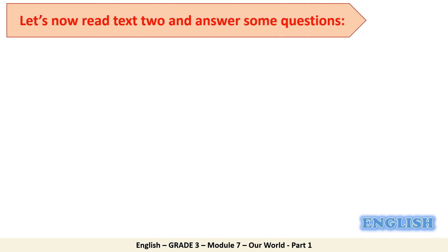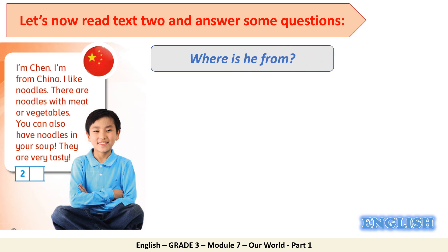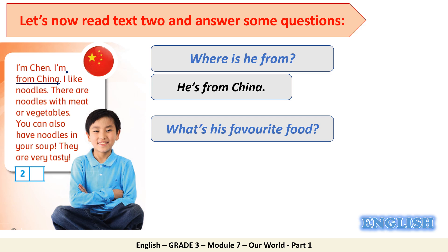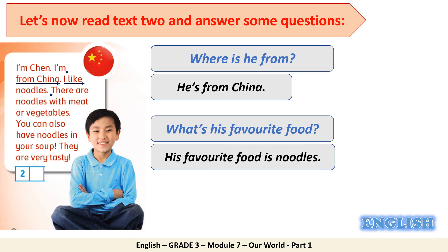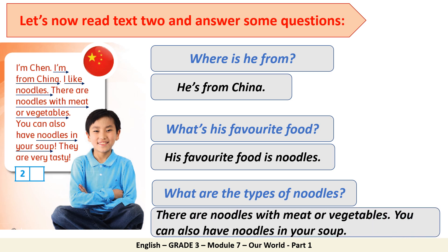Let's now read the second text and answer some questions. Look at the picture. Number one — where is he from? Excellent — he is from China. Number two — what's his favorite food? Excellent — his favorite food is noodles. Number three — what are the types of noodles? Excellent — there are noodles with meat or vegetables. You can also have noodles in your soup. Fantastic job!